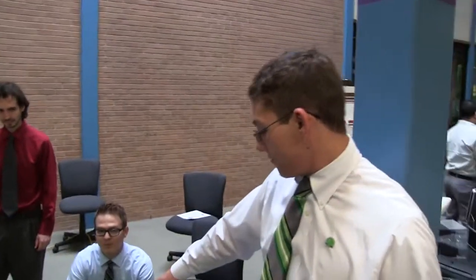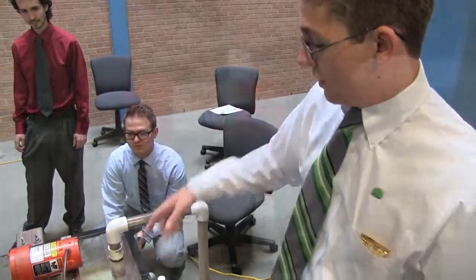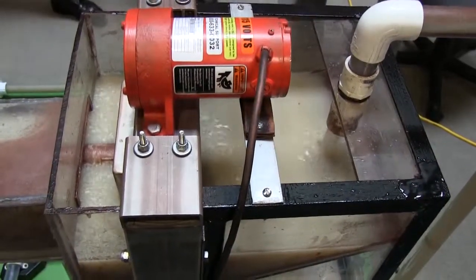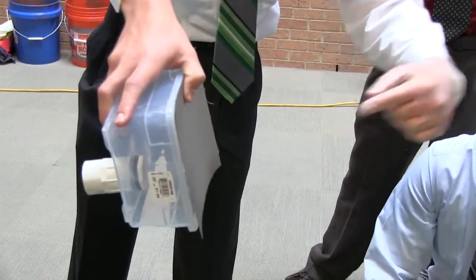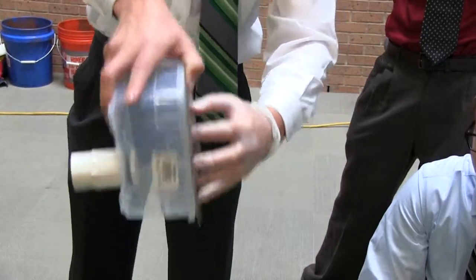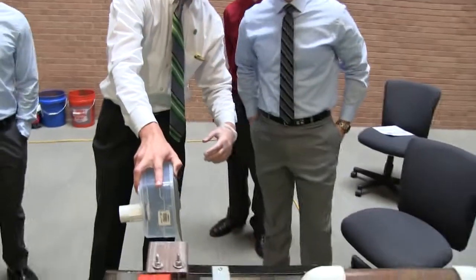As soon as we hit this flow valve, liquid is able to come up into the module. Inside of this is the actual filter. It sits like this. The liquid is able to pass through because it's completely sealed and submerged in the dirty liquid.